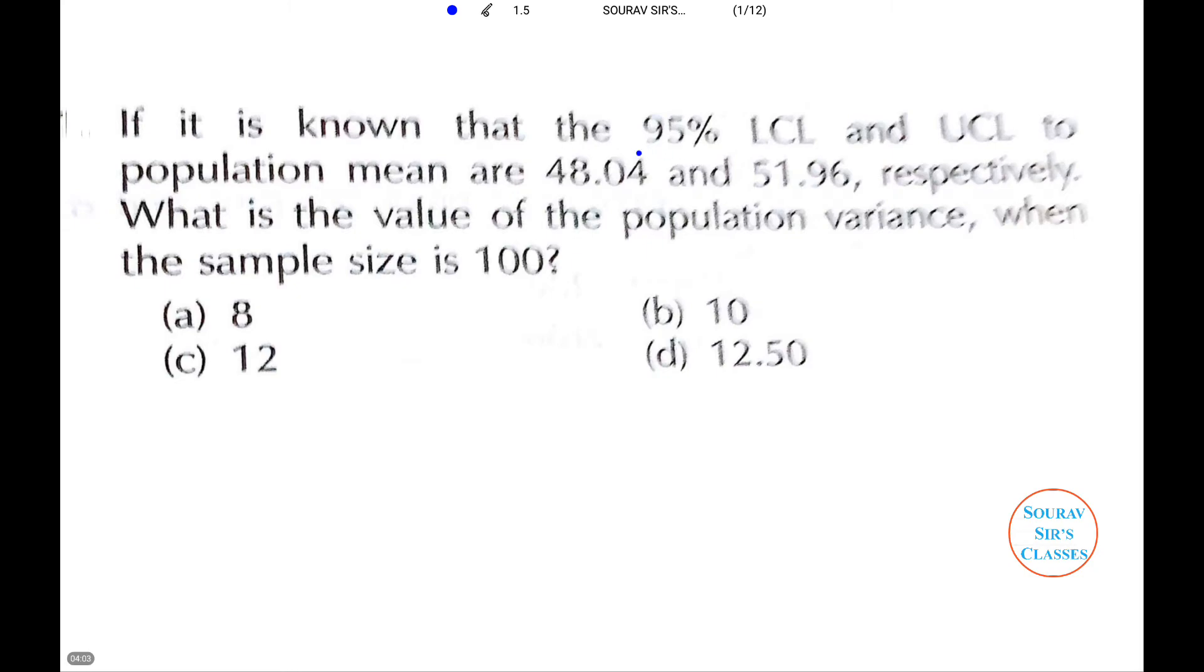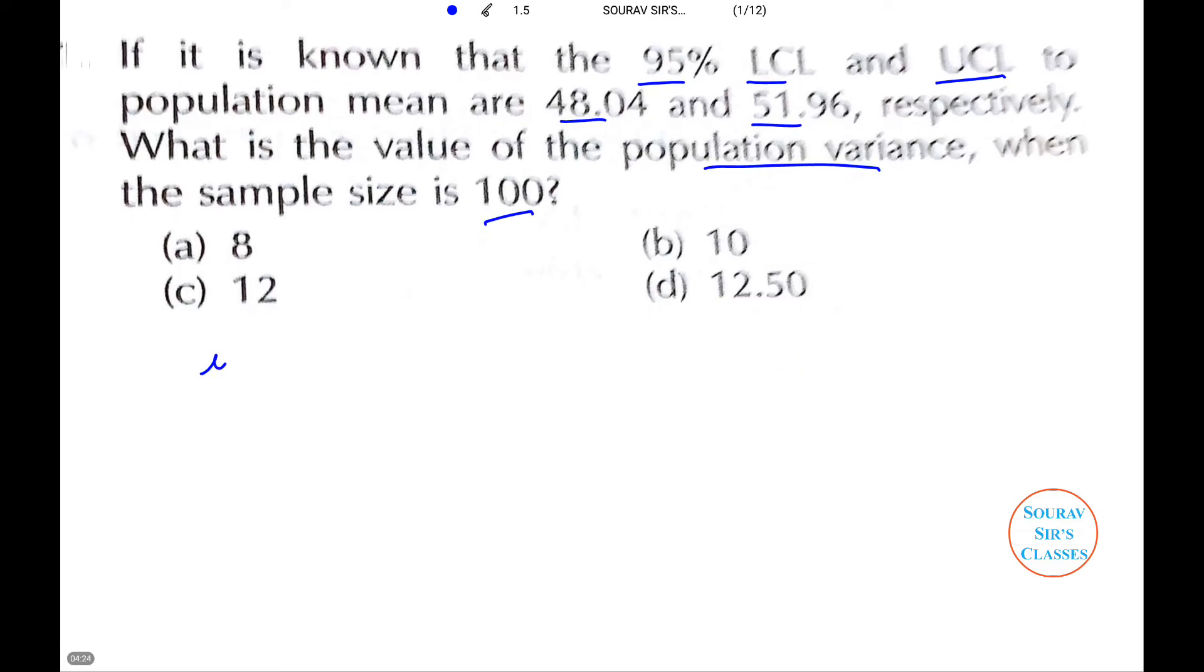The next question is: if it is known that the 95 percent of LCL and UCL, lower confidence limit and upper confidence limit to population mean are this and this respectively, what is the value of population variance when the sample size is 100? Let's do this. We have μ minus SE(x̄) z_α equals 48.04. This implies that μ minus SE(x̄) into 1.96 equals 48.04, or μ plus SE(x̄) by z_α equals 51.96.